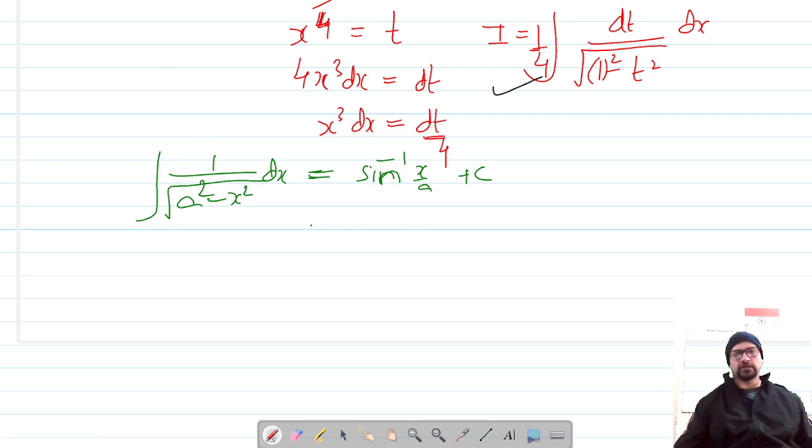It gives me I equals our integral I equals 1 by 4 and this is sine inverse t by a is 1 plus C. Let's re-substitute the value of t.